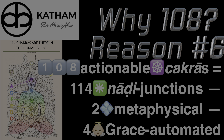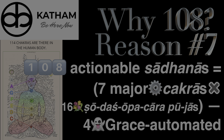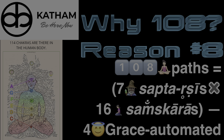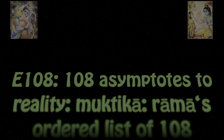Reason number 4: 27 nakshatras into 4 padas per nakshatra gives 108 padas. Reason number 5: 9 grahas into 12 rashis or zodiac signs gives 108 possibilities. Reason number 6: 108 actionable chakras equals 114 nadi junctions minus those which are not actionable.